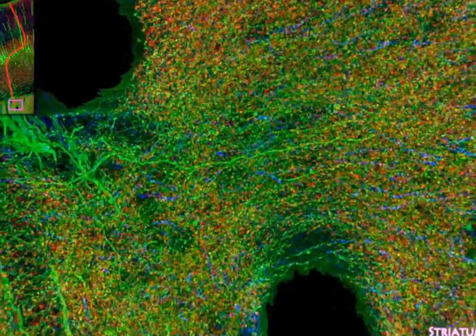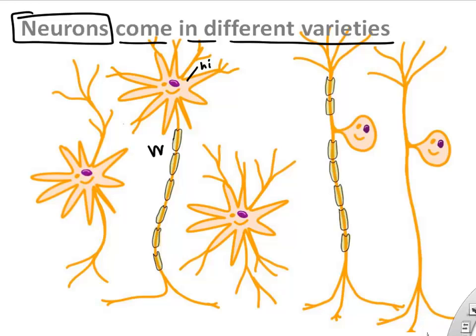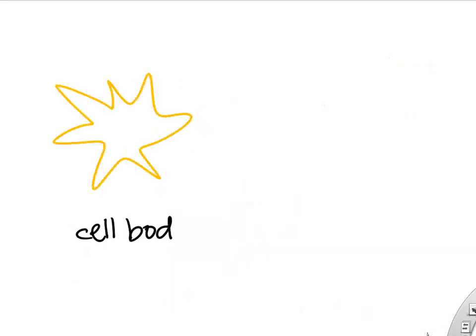The peripheral nerves in our body are also full of cells. The most famous is the neuron, which comes in many varieties. A neuron, like any cell, has a cell body that contains a nucleus — the DNA instruction book.